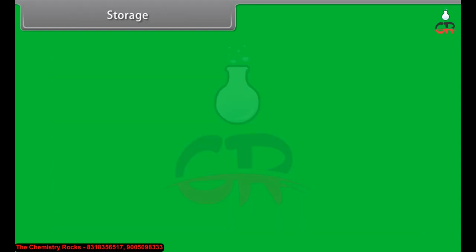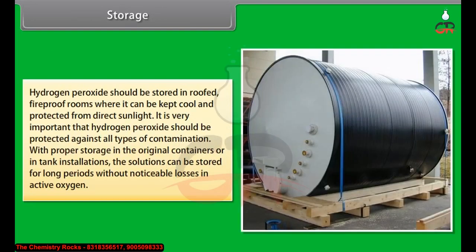Storage: hydrogen peroxide should be stored in roofed, fireproof rooms where it can be kept cool and protected from direct sunlight. It is very important that hydrogen peroxide should be protected against all types of contamination. With proper storage in the original containers or in tank installations, the solutions can be stored for long periods without noticeable losses in active oxygen.